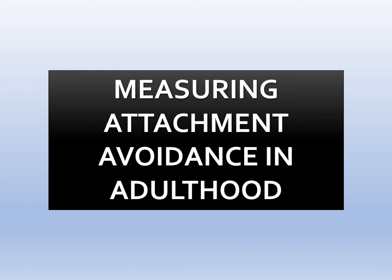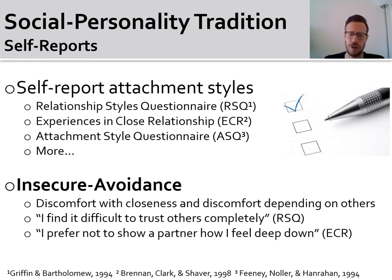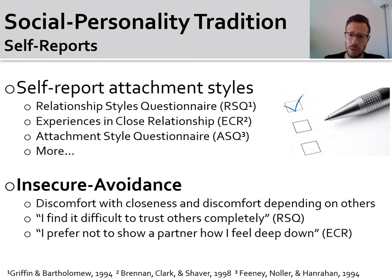Assessing attachment avoidance in adulthood has been done in two main ways. In the social personality tradition, insecure avoidance attachment styles are assessed through self-report questionnaires such as the Relationship Styles Questionnaire and Experiences in Close Relationships. Individuals who score higher on the dimension of insecure avoidance tend to exhibit discomfort with closeness and discomfort depending on others. Example items that load on this dimension are: 'I find it difficult to trust others completely.'